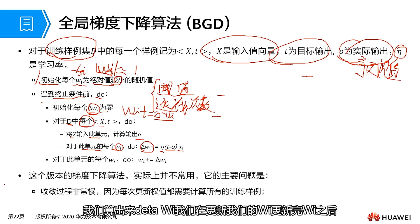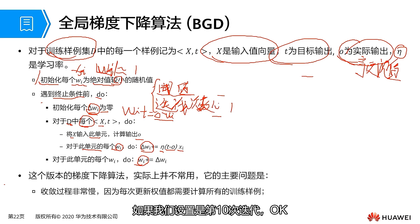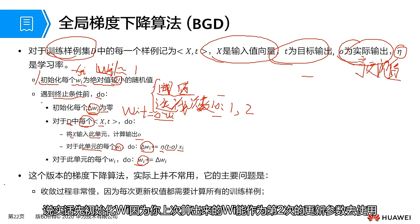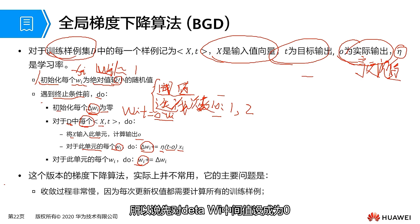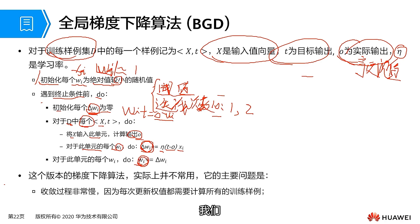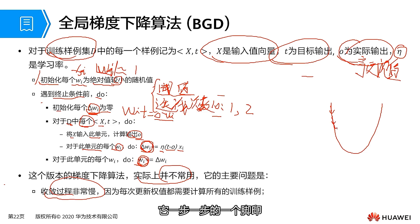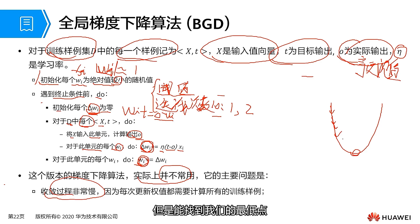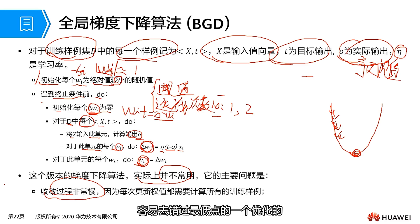After updating WI, we complete one iteration. In practical applications, the global gradient descent algorithm is not commonly used because it is too slow — like a turtle descending a mountain, using every sample step by step to find the valley at the bottom. The stochastic gradient descent algorithm speeds up the pace, but it is easy to miss the global minimum. In stochastic gradient descent, when updating parameters, we do not use all sample values — instead we randomly select one sample to calculate the update.